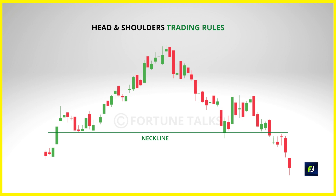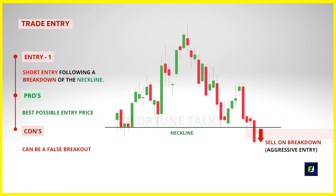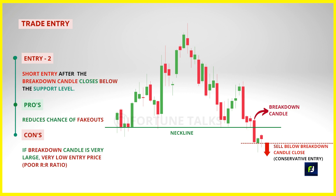There are four possible entry methods for trading the head and shoulders pattern. The first and most aggressive entry is when the price breaks down the neckline. Wait for the breakdown candle to close below the neckline, then take a short entry below the close or the lower price of the breakout candle. The advantage of this technique is that you enter the trade very early and get the best possible entry price, but the drawback is that the price could reverse and give a false breakout, hitting your stop loss.